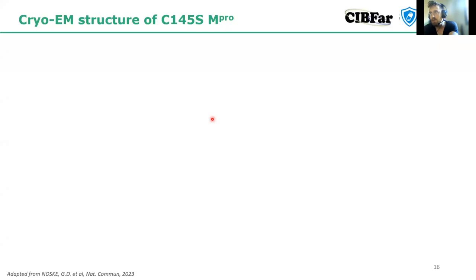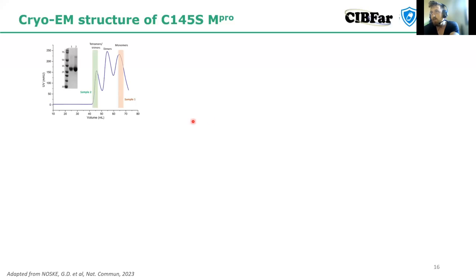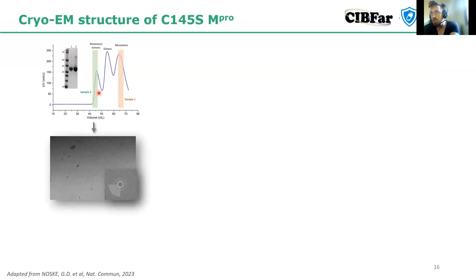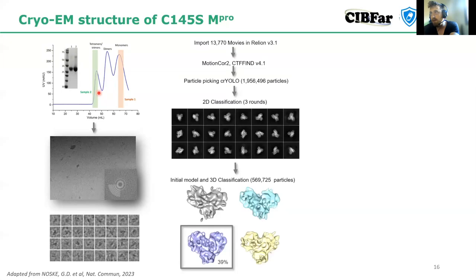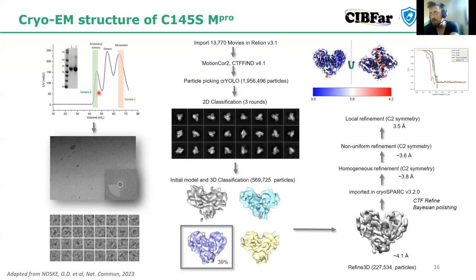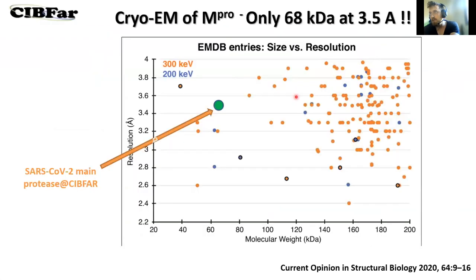We continued to study these questions in a second paper that was recently published, using cryo-EM. We took the tetrameric sample and performed cryo-EM at Diamond at IBIC. We were able to solve a structure of M-pro by cryo-EM, which was a surprise because it was a really small sample — only 68 kilodaltons.